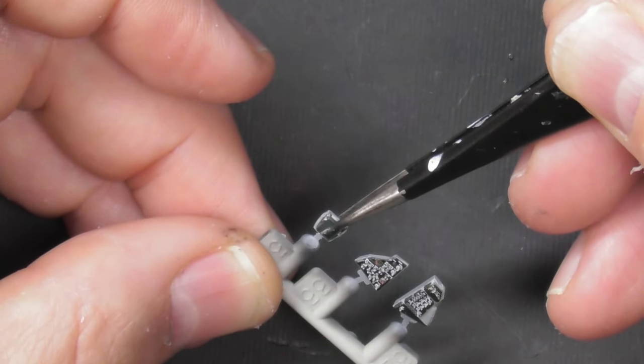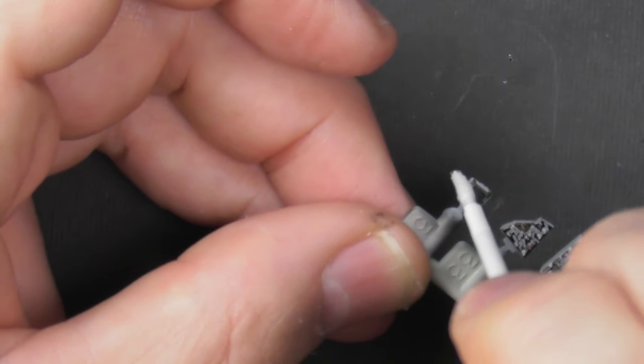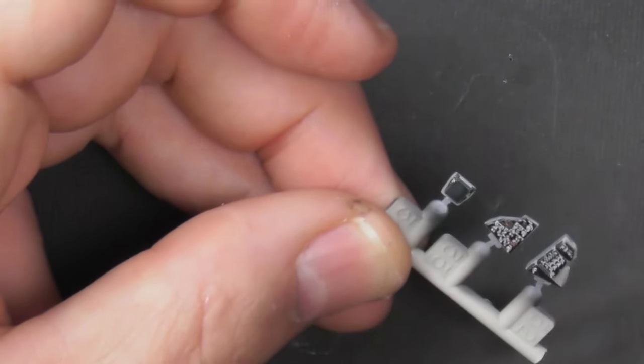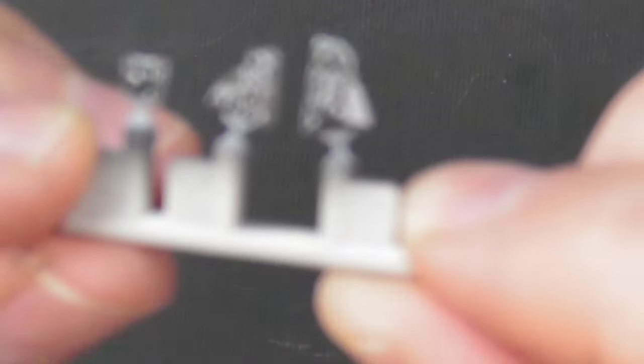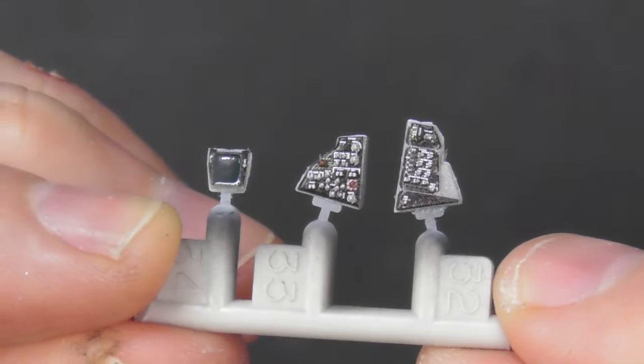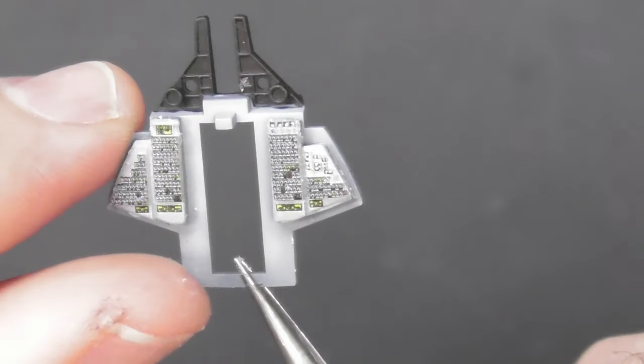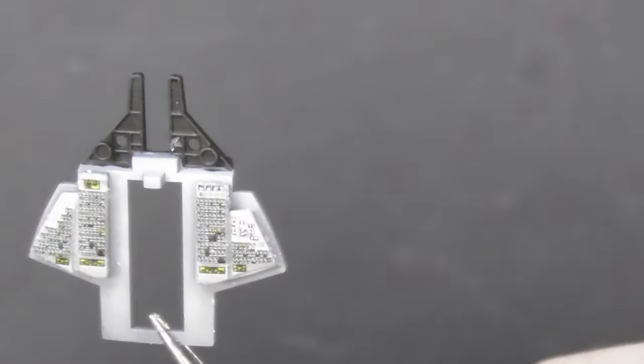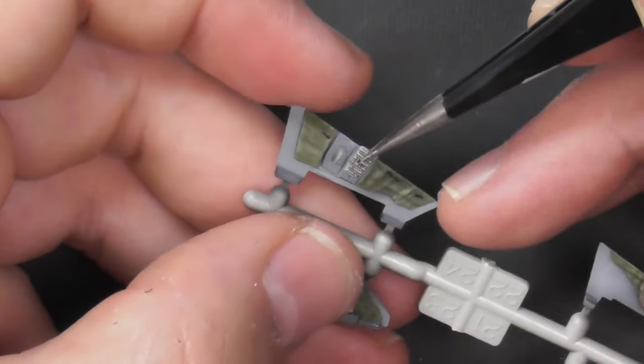It can be easier to leave bits on the sprue, as you can see here. You've got a natural handle that way. Just cleaning up some of the excess glue. Much easier to handle. Then you can just snip them off and stick them on. You can see I've pretty much matched the background paint so the colors work.